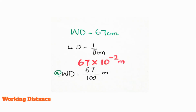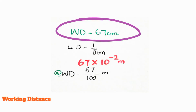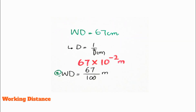The ideal working distance for retinoscopy is 67 centimeters. This is the working distance — the distance at which you are performing the retinoscopy. The distance can vary; by default you keep an arm's length. If you can't measure exactly 67 centimeters, perform the retinoscopy at arm's length, measure your arm distance in centimeters, and then convert it into the dioptric value using the formula D equals 1 over f in meters.